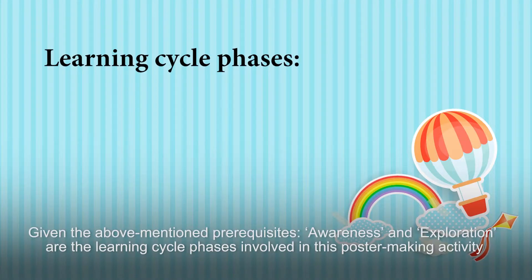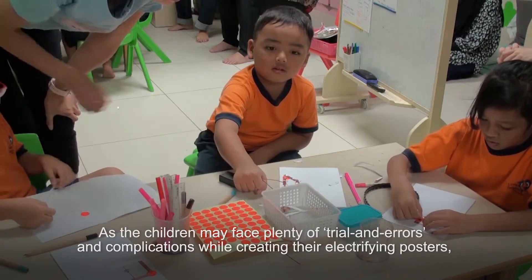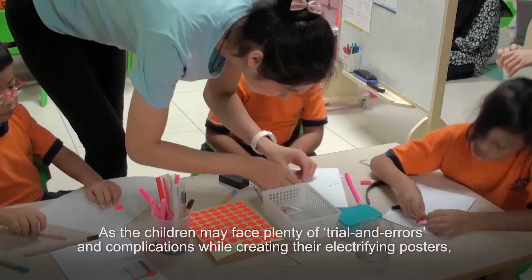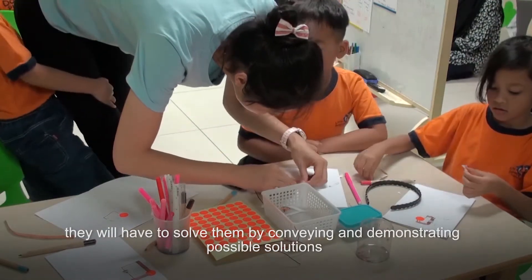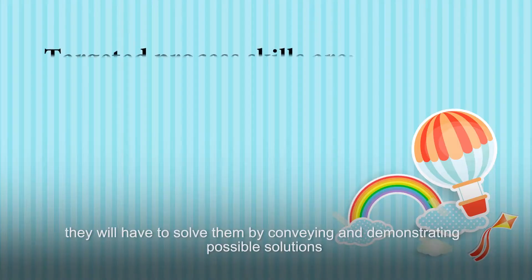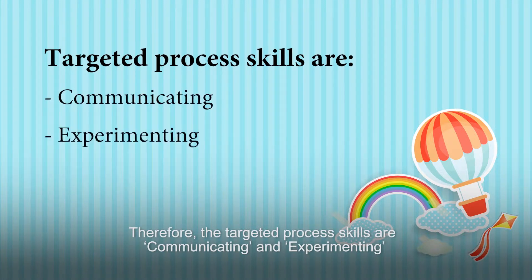Given the above-mentioned prerequisites, awareness and exploration are the learning cycle phases involved in this poster-making activity. As the children may face plenty of trials and complications while creating their electrifying poster, they will have to solve them by conveying and demonstrating possible solutions. Therefore, the targeted process skills are communicating and experimenting.